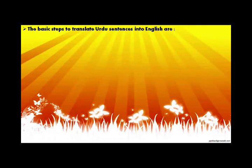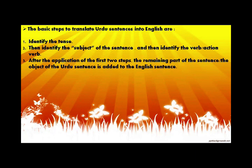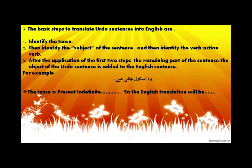First, let's review the basic steps to translate Urdu sentences into English. Step one: identify the tense. Step two: identify the subject of the sentence. Step three: identify the verb or action verb. After applying these first two steps, the remaining part — the object of the Urdu sentence — is added to the English sentence following the structure: subject plus verb plus object. For example, 'Wo school jaati hai' — the tense identified is present indefinite, so the translation is 'She goes to school.' Now let's learn translating all the tenses.